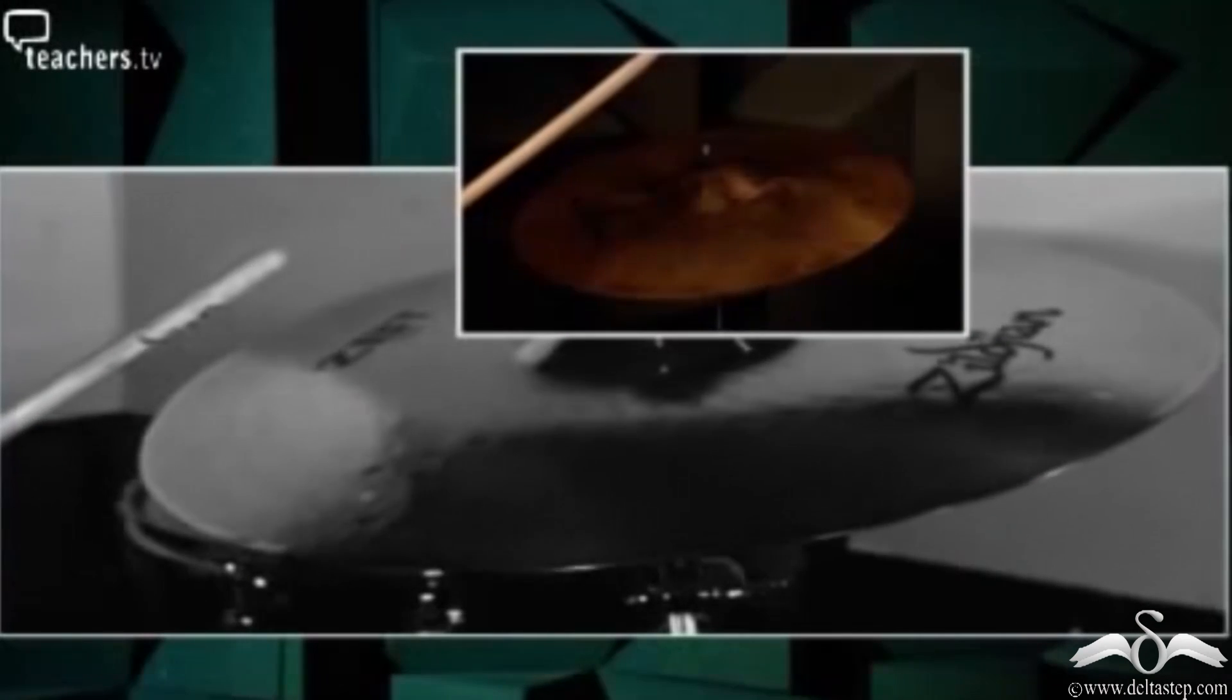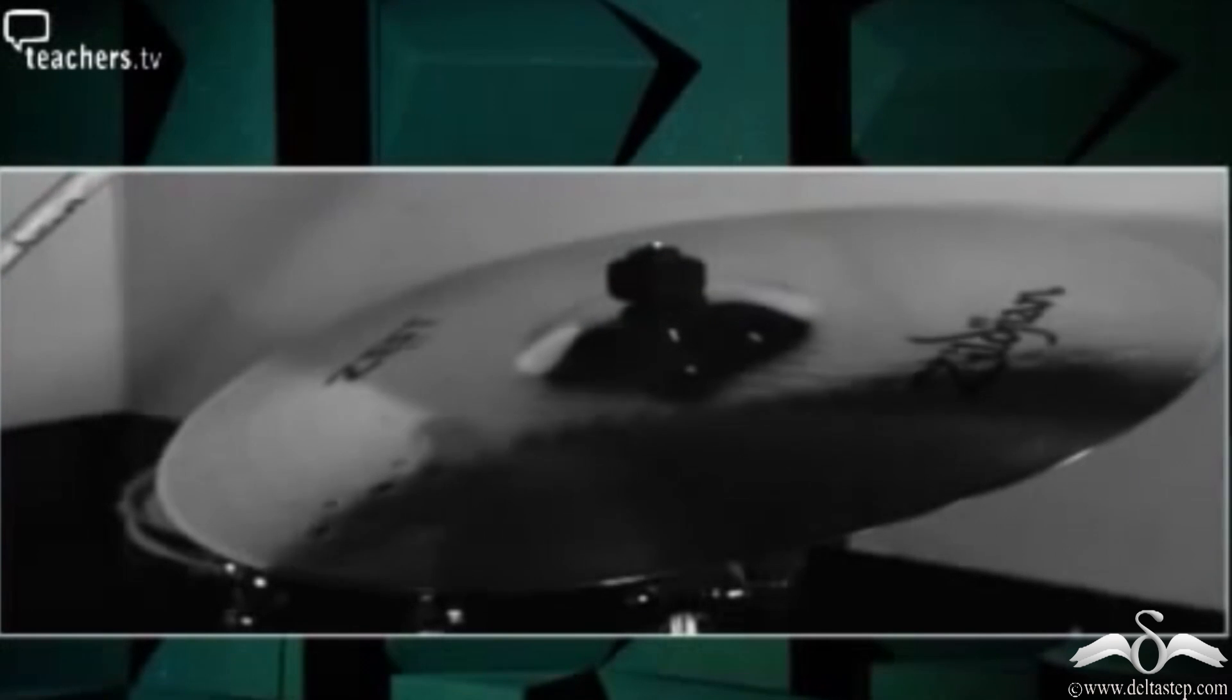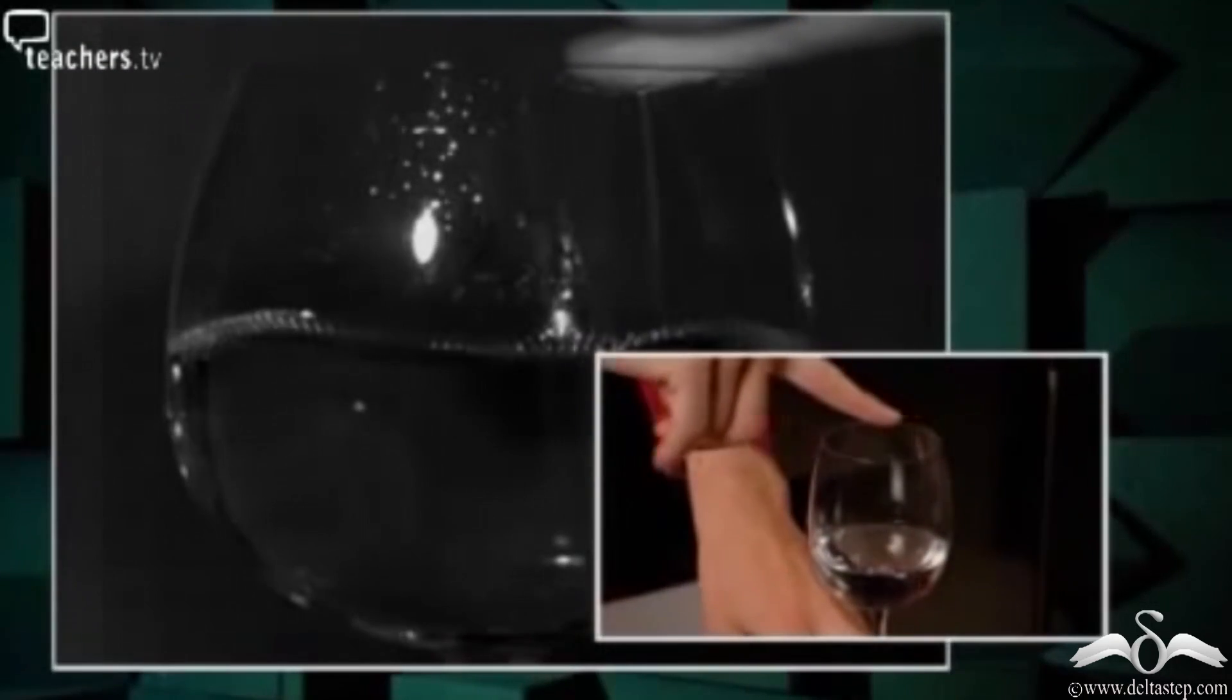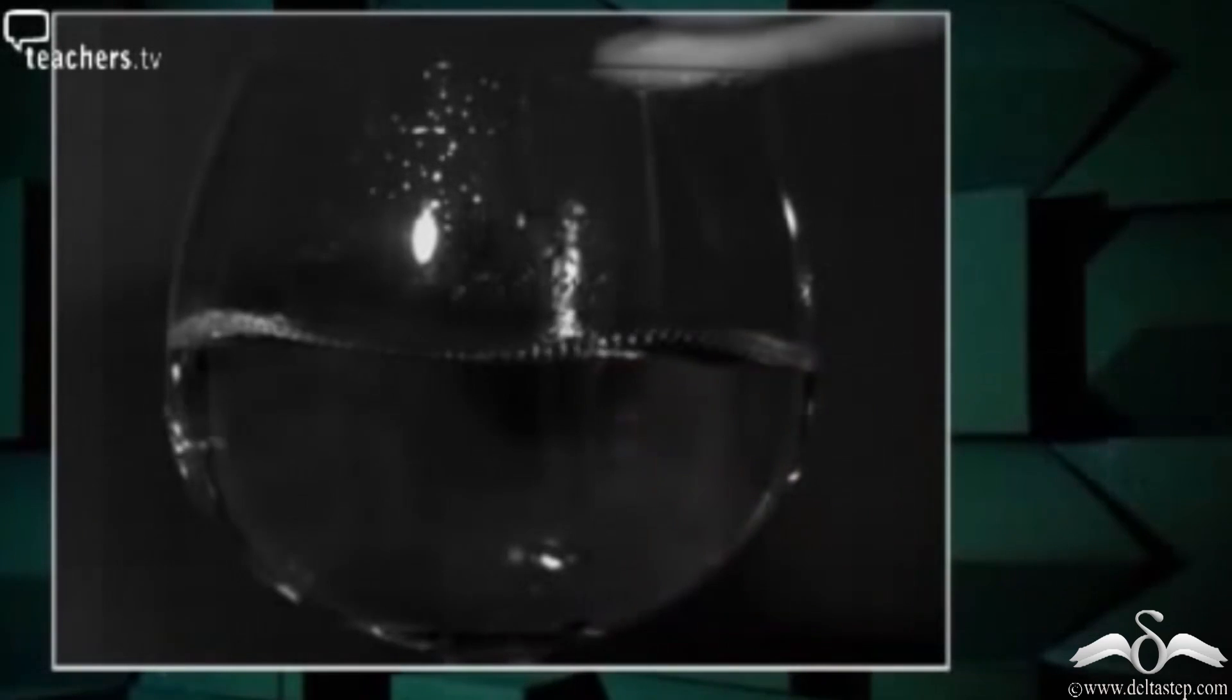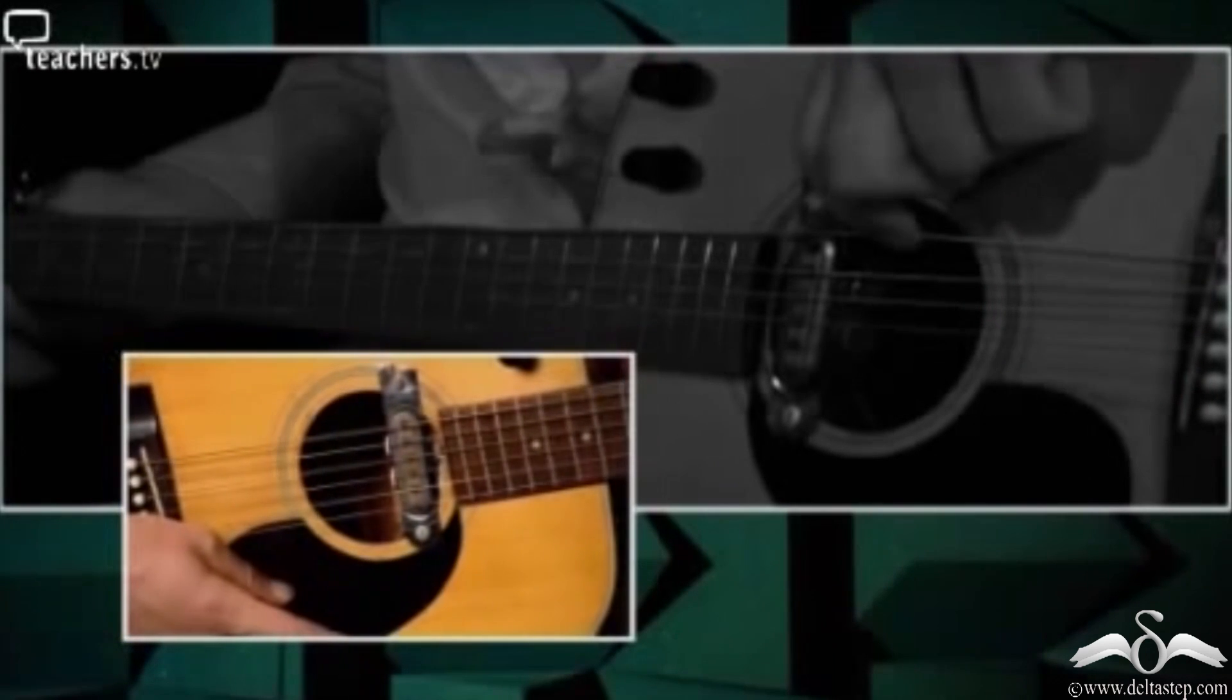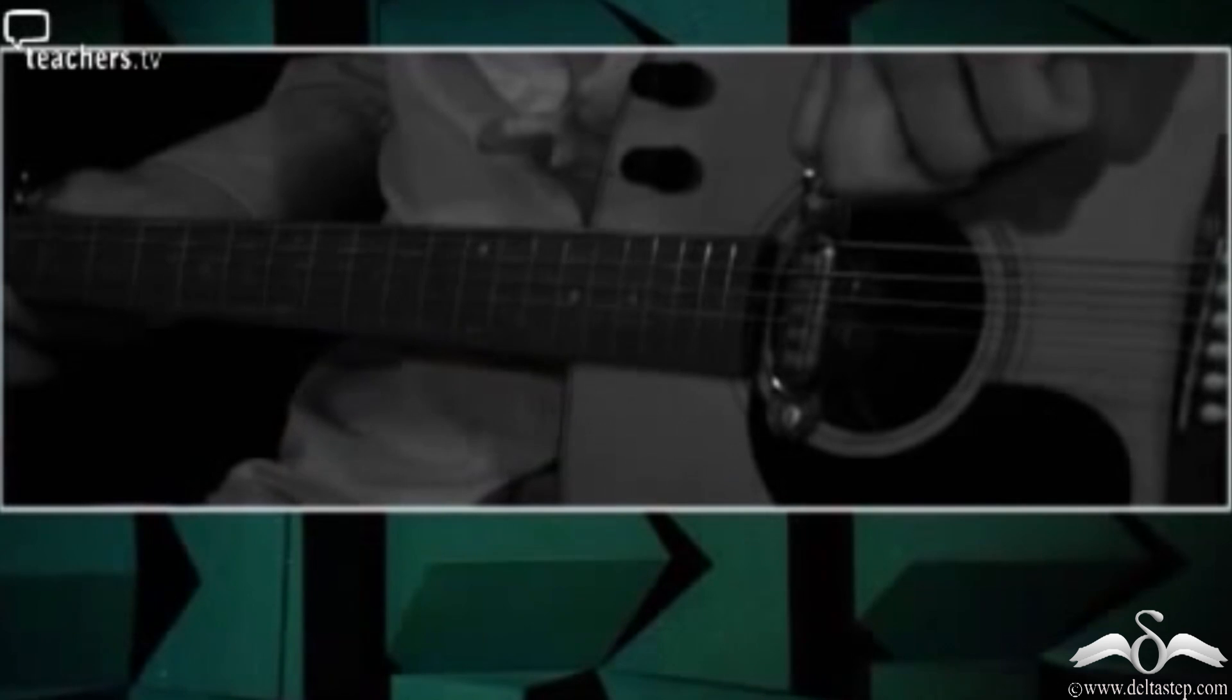Notice how the cymbal of the drum starts vibrating as soon as the drumstick hits it. Also notice the disturbance of the water surface when the rim of the glass is rubbed continuously. And lastly notice how the strings of the guitar vibrate when they are plucked and strung.